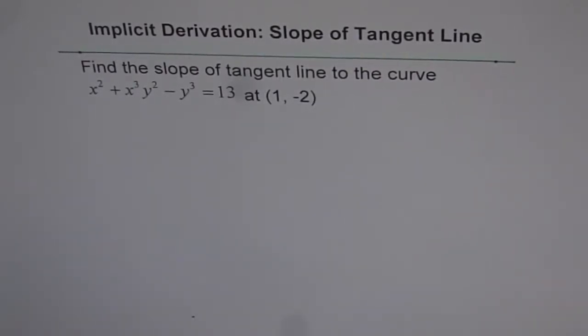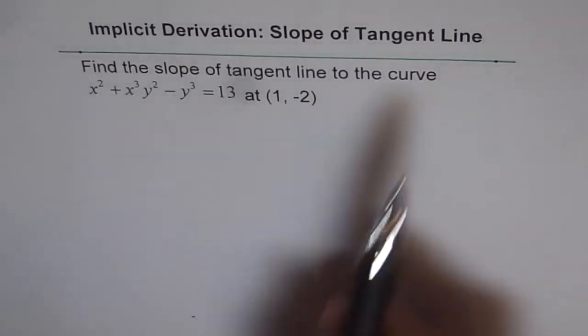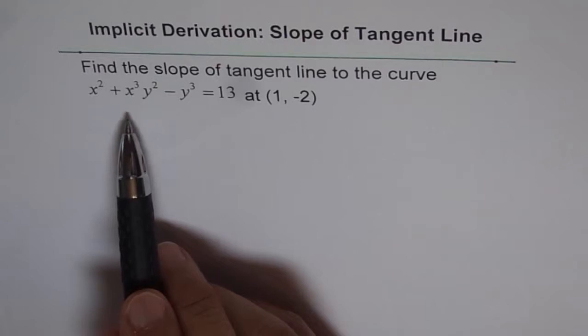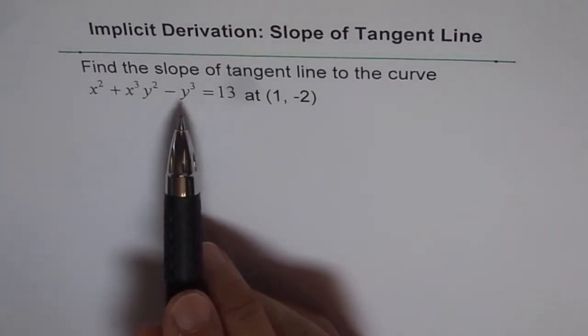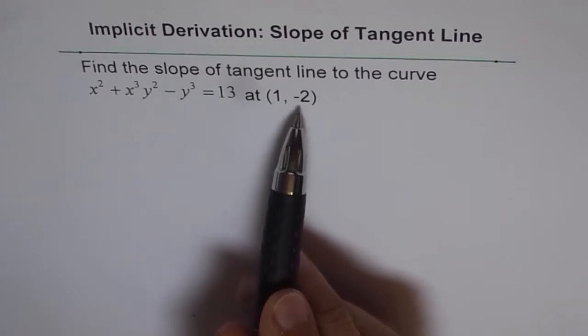Implicit derivation: slope of tangent line. The question is, find the slope of tangent line to the curve x² + x³y² - y³ = 13 at (1, -2).